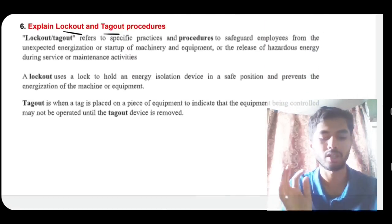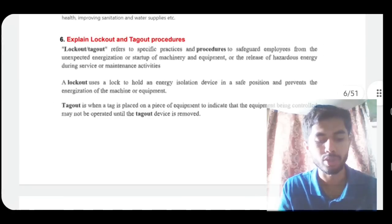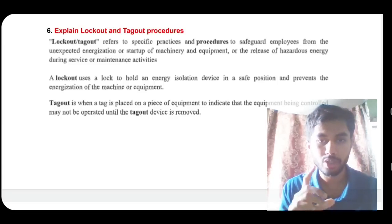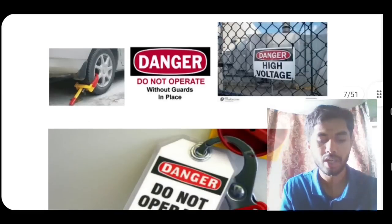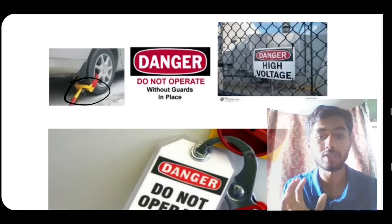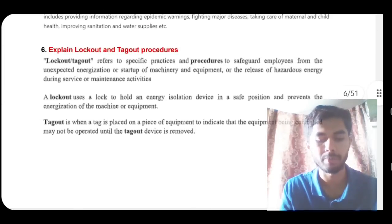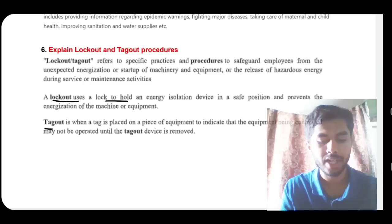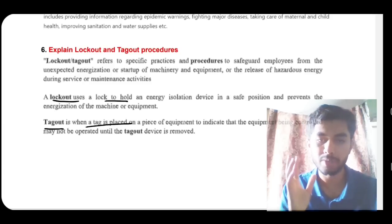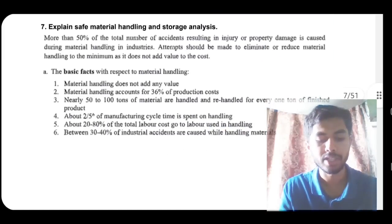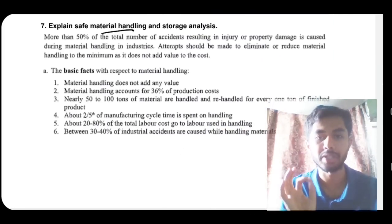Next: explain lockout and tagout procedures. Lockout means locking out a device so it cannot be used — a lock is placed on the energy isolation device so no one can operate it. Tagout is when a tag is placed on the device indicating it should not be operated. Lockout uses a lock; tagout uses a tag. The key rule: no one should be operating equipment without a committed authorized person present.